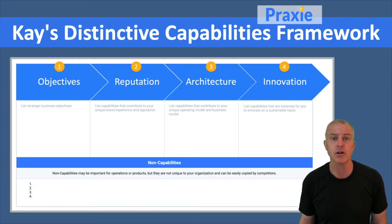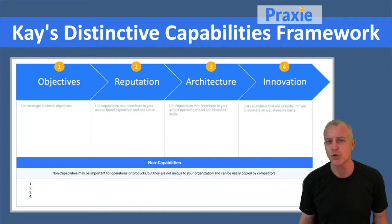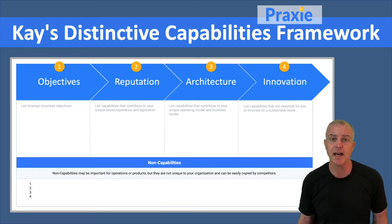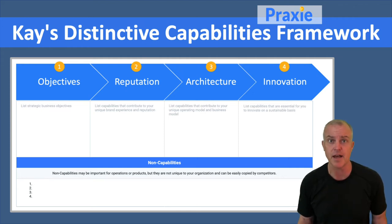The second area is your architecture. Architecture basically means the real core capabilities, the things that give you strategic differentiation in the market that make you different — to allow you to deliver on that brand promise and create that reputation.